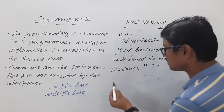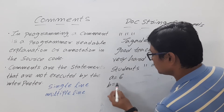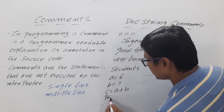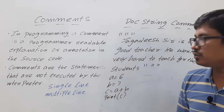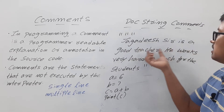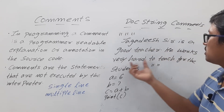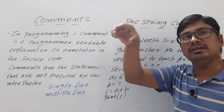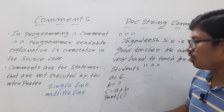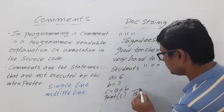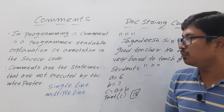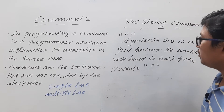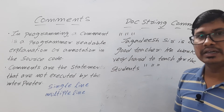If I write a small program — a = 6, b = 7, c = a + b, print(c) — after executing the program, the doc string documentation will appear at the top like a heading, and then it will give the output as 13.